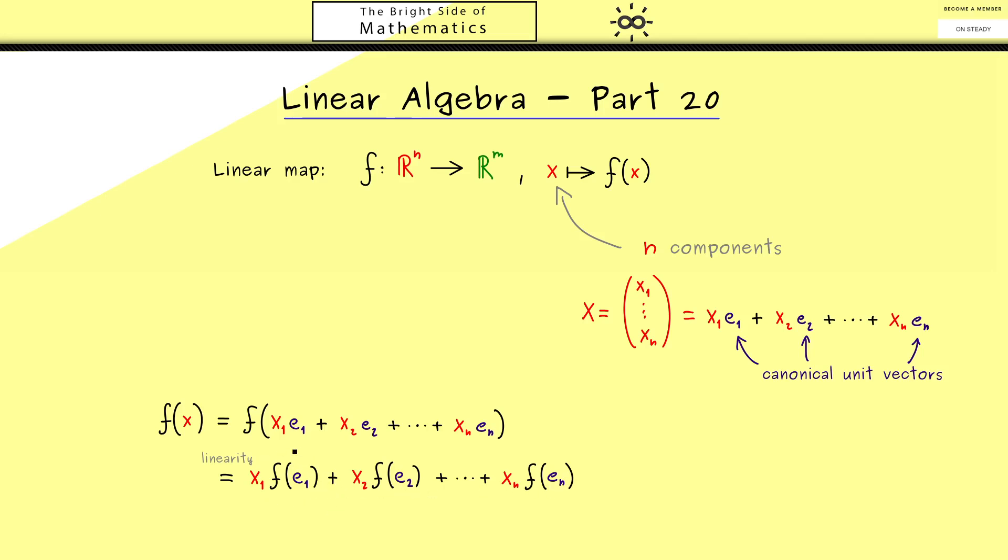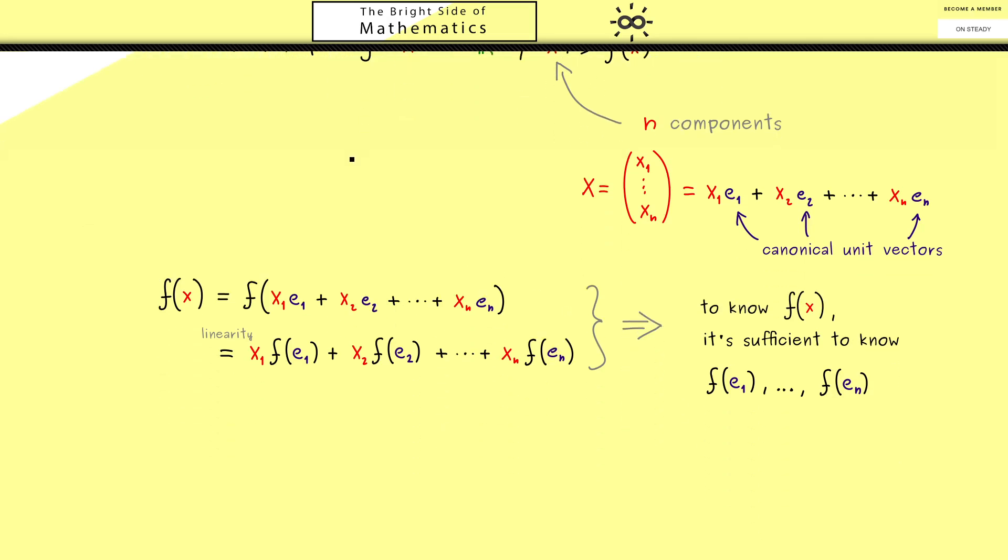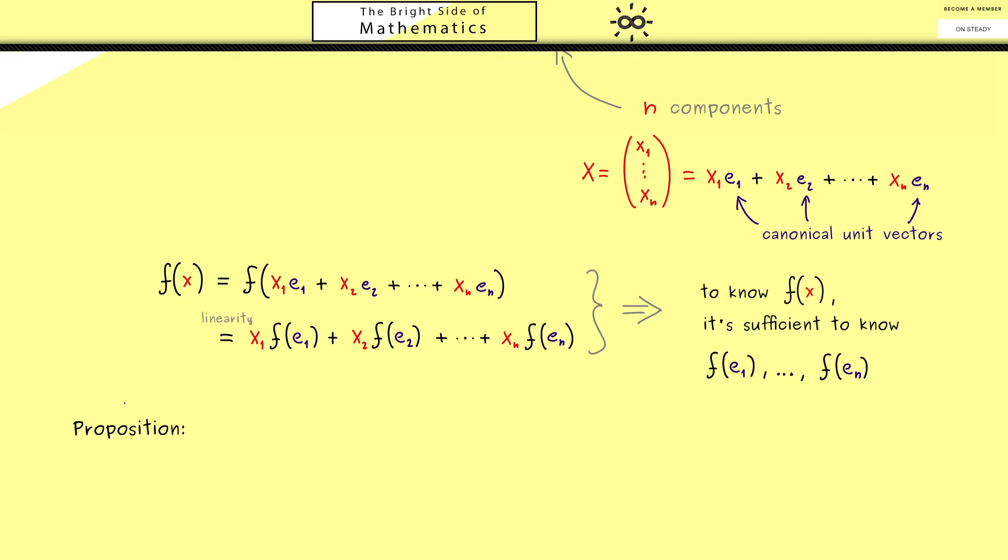Moreover this means if you want to know the vector f of x it's sufficient to know n vectors f of e1, f of e2 and so on. So this is what you can remember. This is our important conclusion here. So in other words if you want to calculate all possible images of this linear map f you just need to know what are the images of the canonical unit vectors. This means that these images here have the same information as the whole linear map f. And exactly this insight leads us to the matrix representation of a linear map.